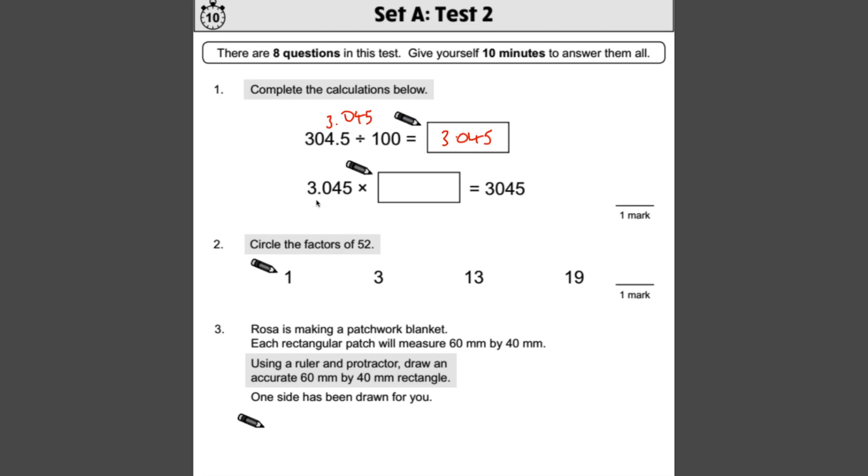Similarly, with this one, 3.045 times something is 3045. Using your knowledge of place value, if you were to slide all these digits three spaces across, that would give us 3045. So if we're going to slide it three spaces across, you need to know that that number is 1000, because the number of zeros dictates how many spaces it moves. So if it's moved three spaces, your number should have three zeros.